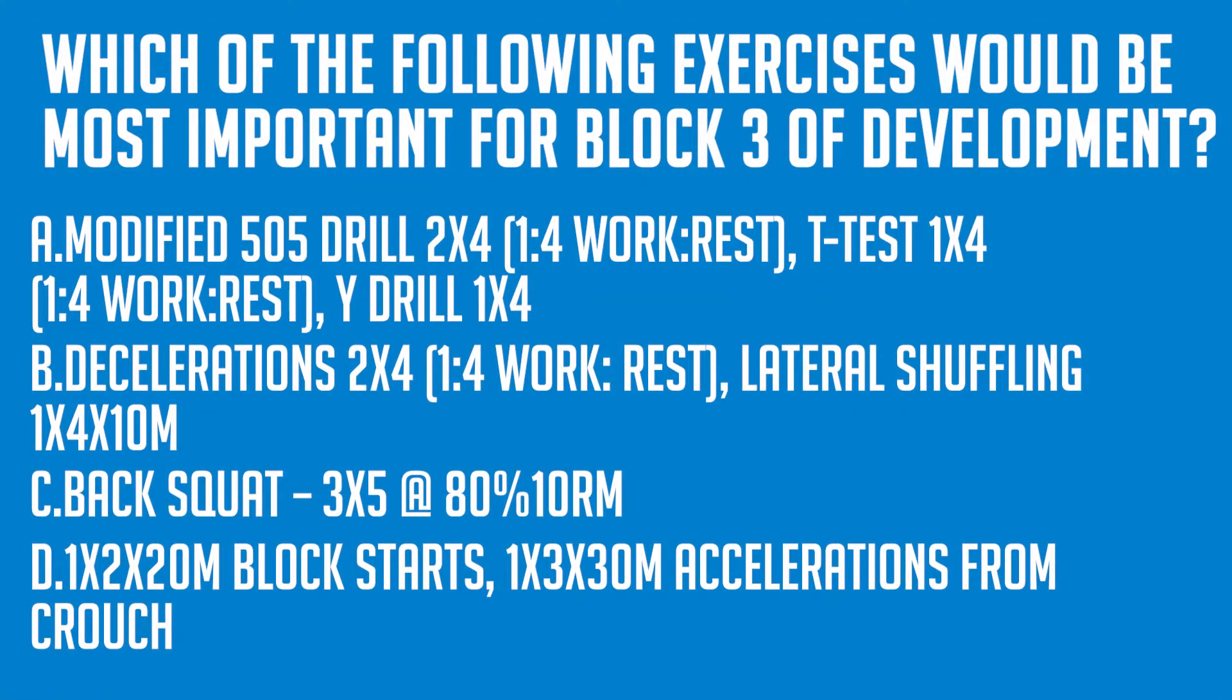The 40 meter sprint time for division 1 men's soccer players is 4.90 plus or minus 0.2, placing our athlete slightly lower than the average. With all this data in mind, we can now see that the most important aspect for this athlete is his agility. If we take a look back at our answer options, we can deduce that A and B are both agility options, while C is max strength, and D is speed. Knowing this information, we can now narrow our choices down to A or B.